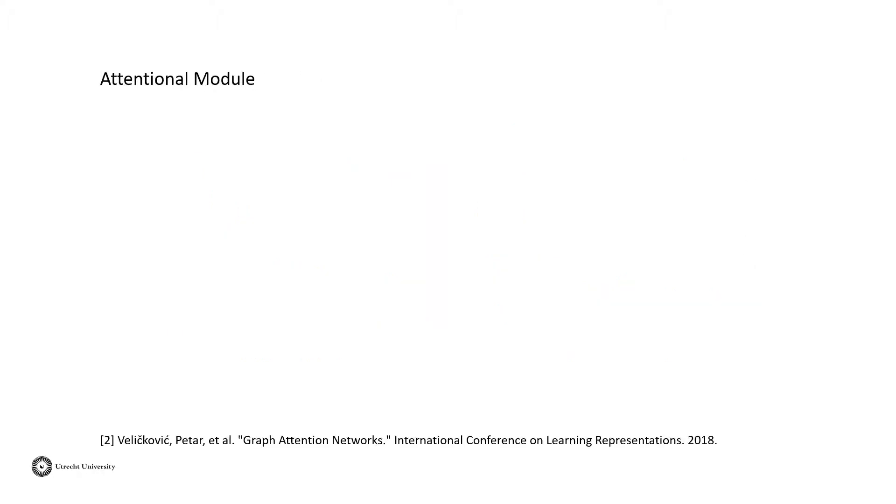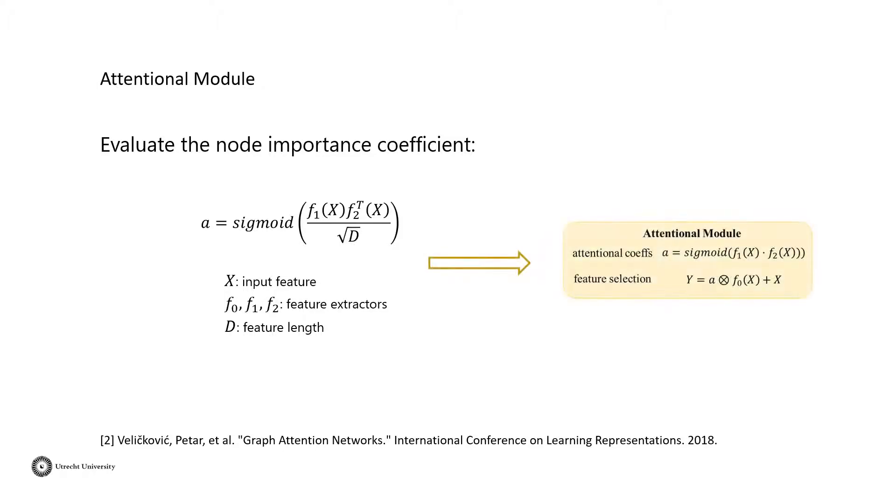Second module is the attention module. As attention has been successfully applied in many areas, the proposed graph attention module focuses on gathering information from important points. That is, the attention module tries to model point correlations by finding out the importance of one point over all other points. In this way, we get the attention map with the values ranging from 0 to 1. Then we multiply the attention map with input features and help boosting the feature representations.